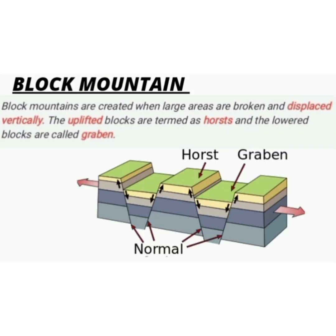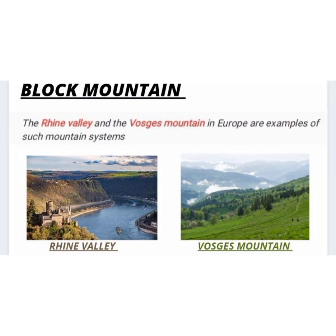Block mountains are created when large areas are broken and displaced vertically. The uplifted blocks are termed as horst and the lower blocks are called graben. The Rhine valley and the Vosges mountains in Europe are examples of such a mountain system.